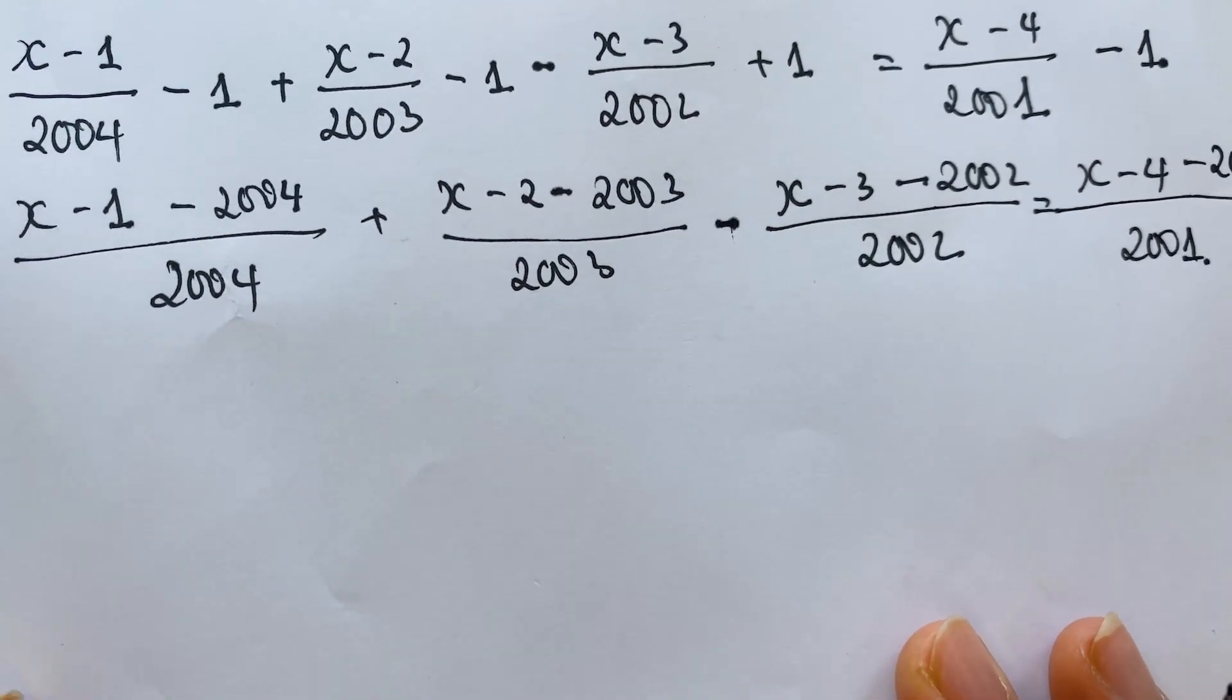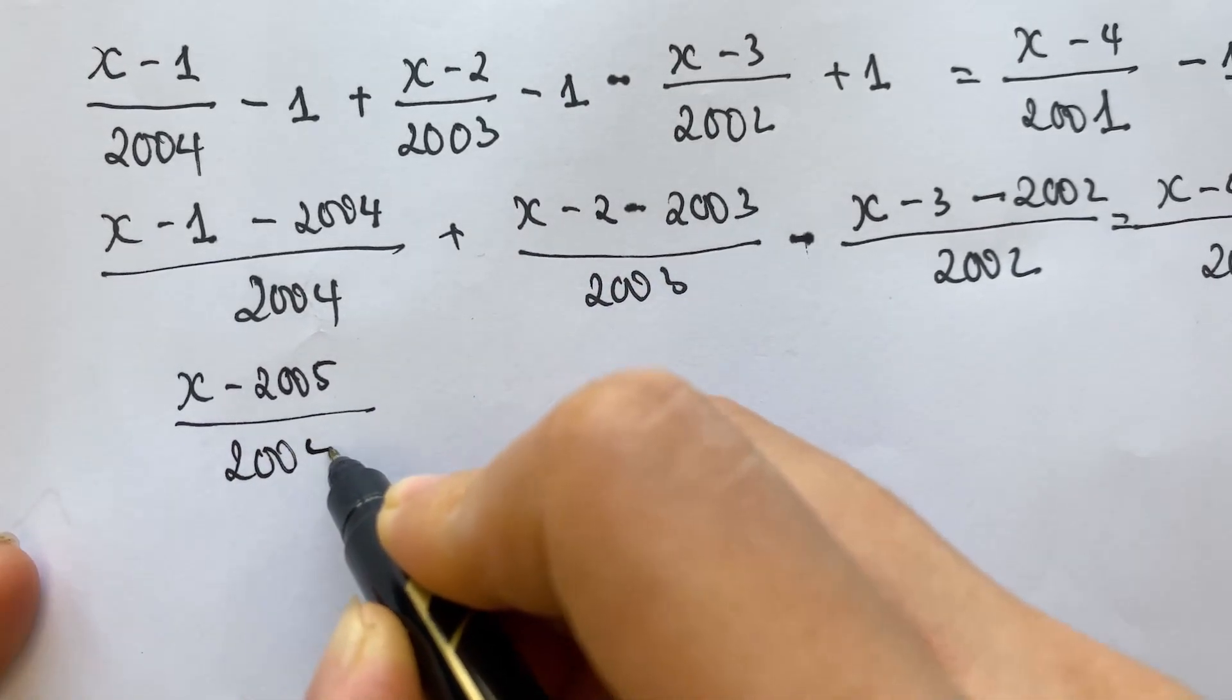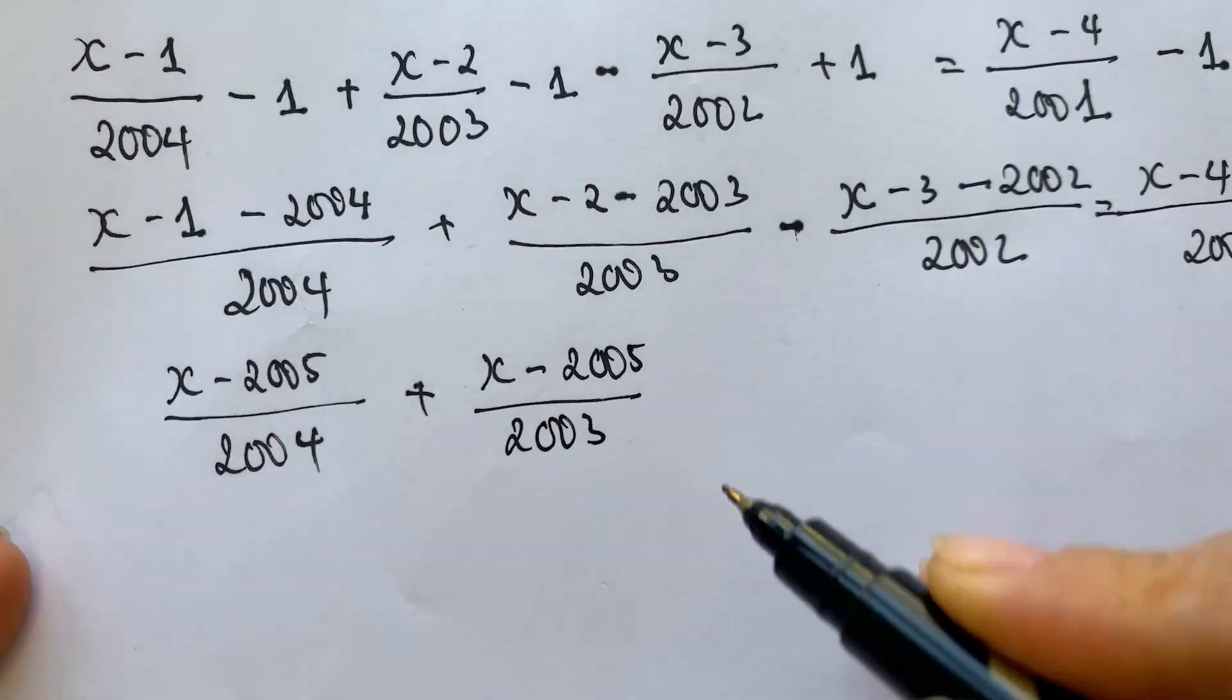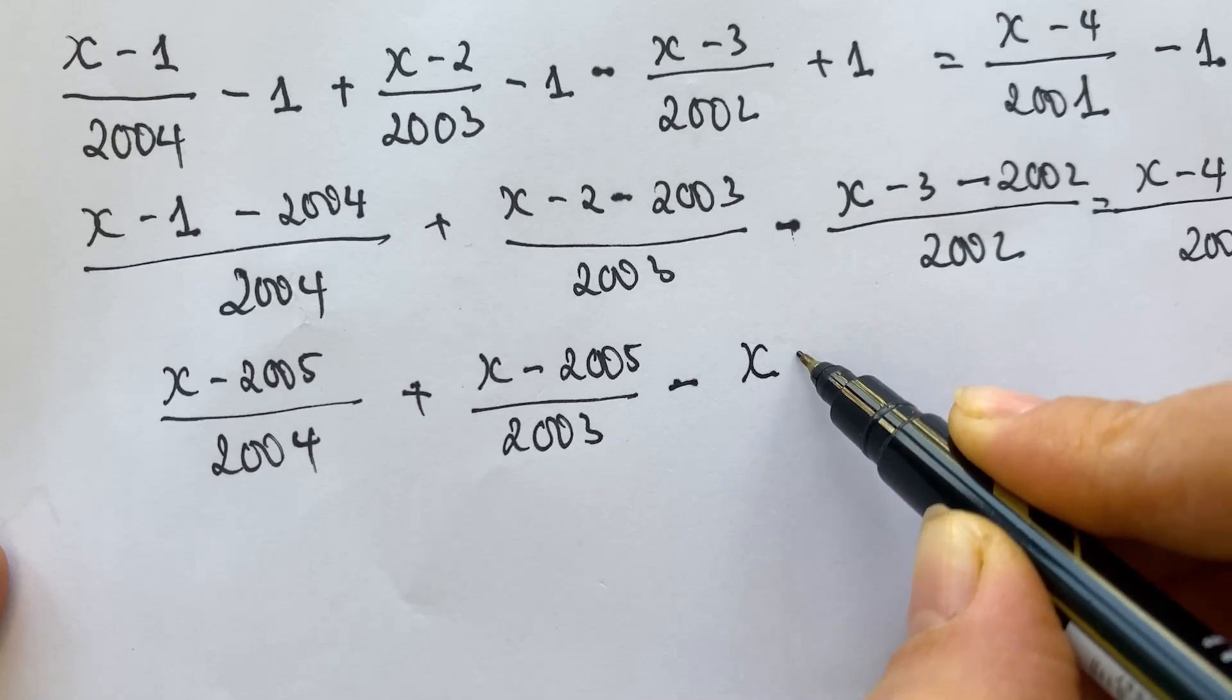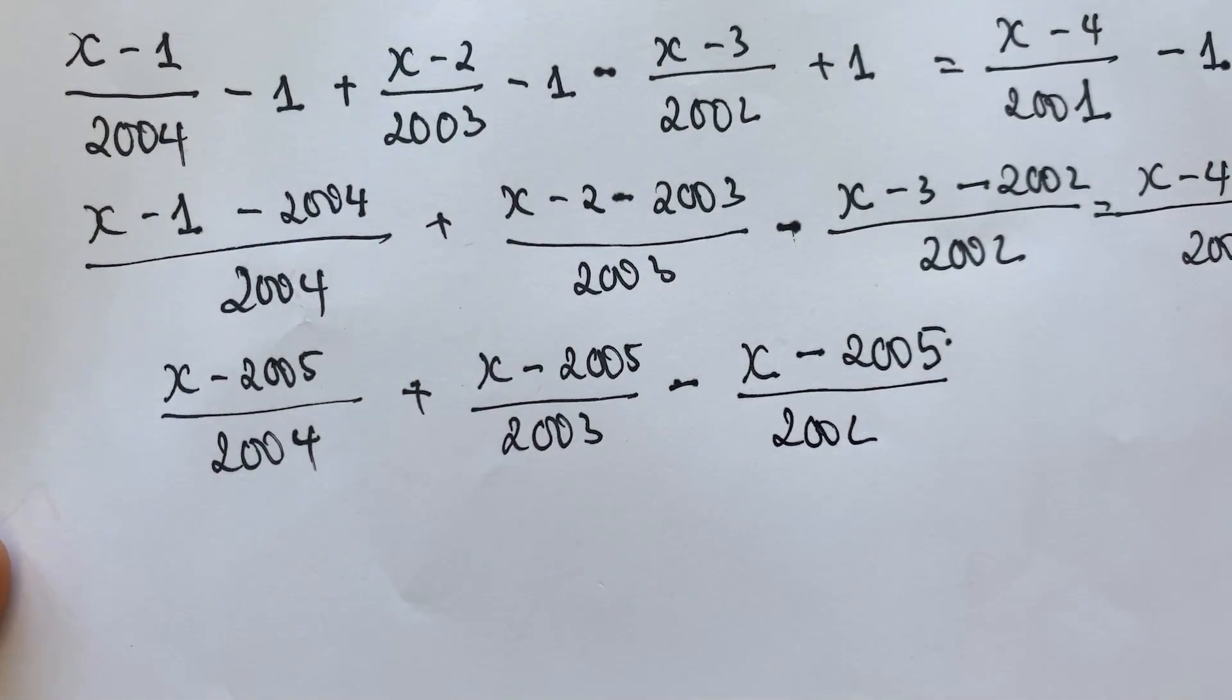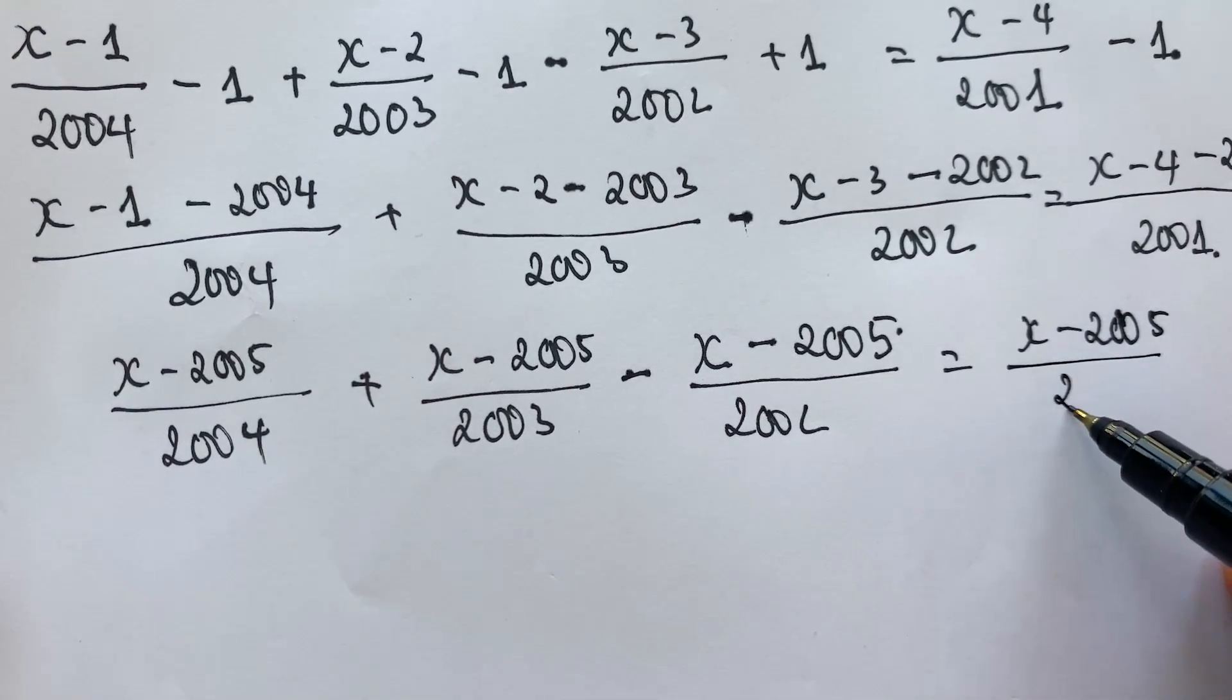For this method, you can find the common factor. Everyone can see x minus 2005, right? Over 2004, plus x minus 2005 over 2003, minus x minus 2005 over 2002. So you can see on the right-hand side, we have x minus 2005 over 2001.